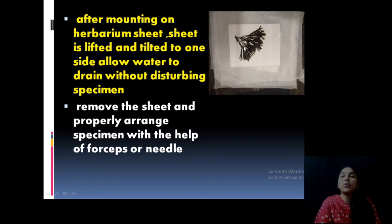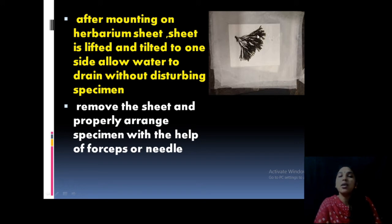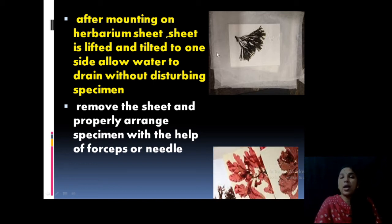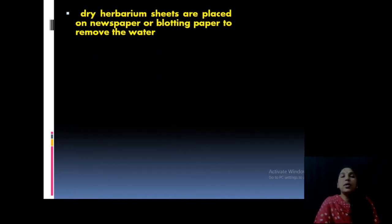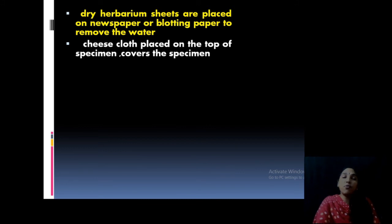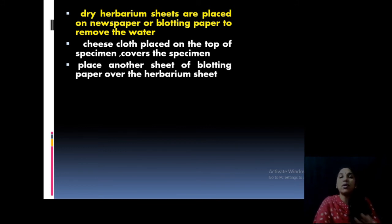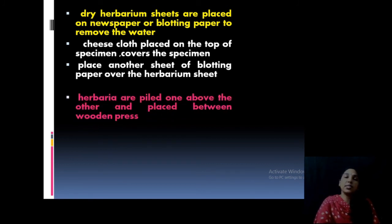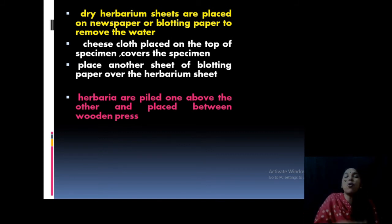The sheet is removed and the specimens are arranged with the help of forceps and a needle. This is the sheet; this is the cheesecloth. Usually all the process is done inside water. Keep the cloth in water in a tray, spread the algae using needle or forceps, then take it out, drain off all the water, and it is ready to paste. Finally it will appear like this. For drying, one to two weeks is required for complete drying. Using blotting paper, remove all the water. The herbarium prepared sheets are piled one above the other and kept under a weight or a wooden press.